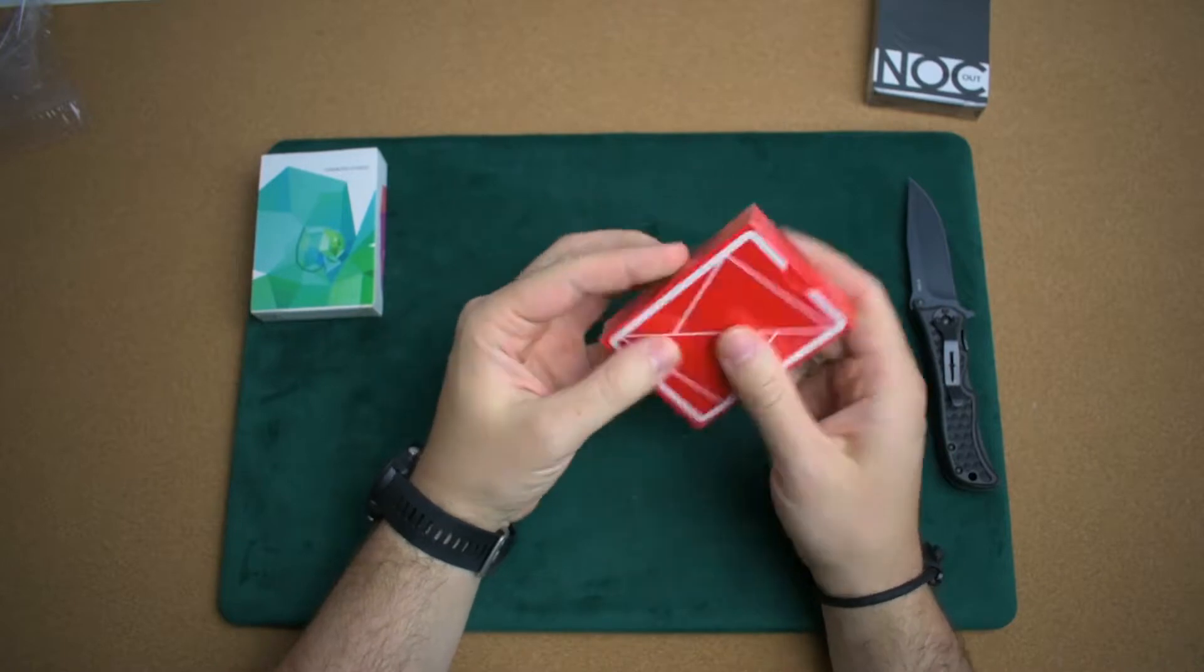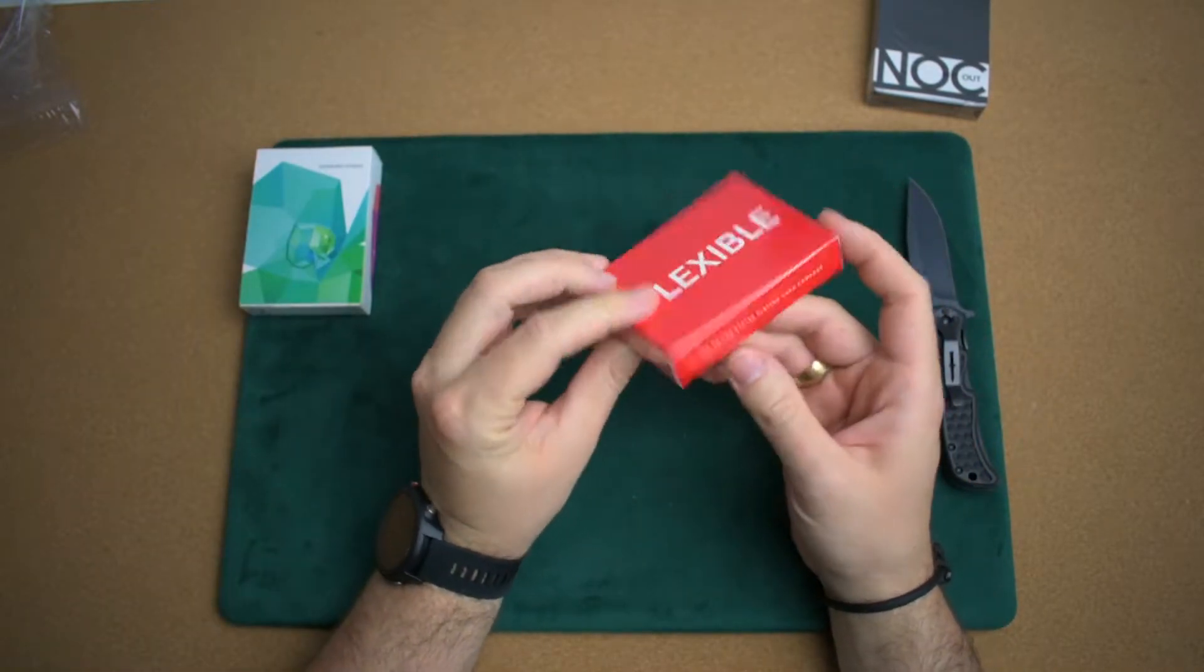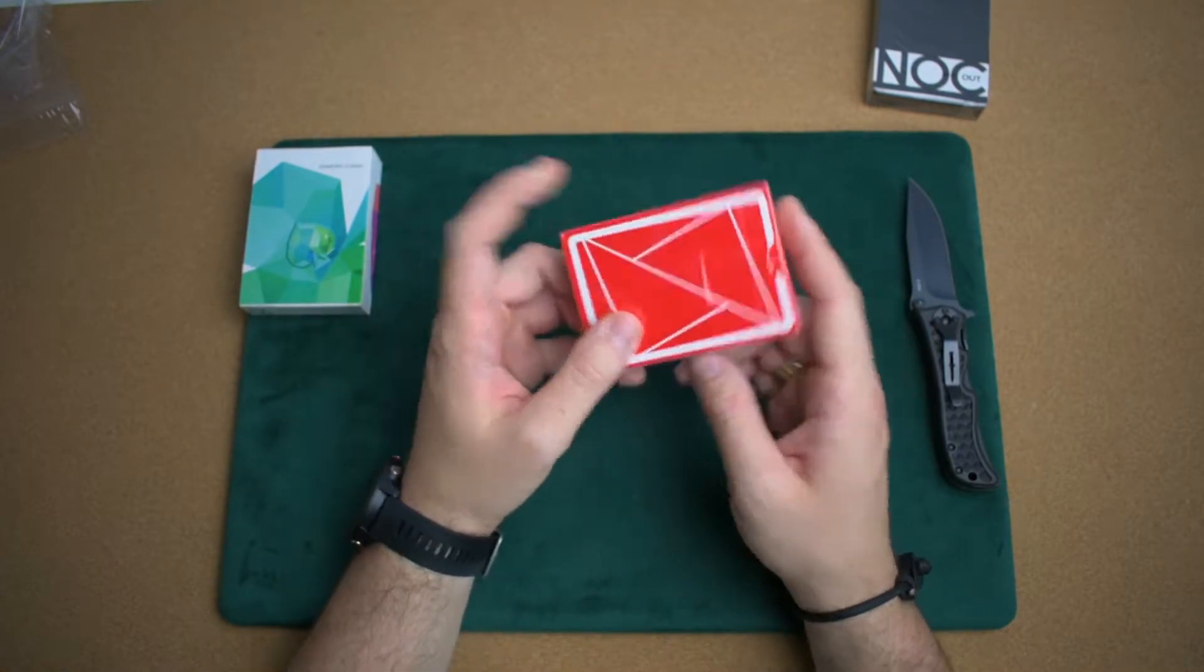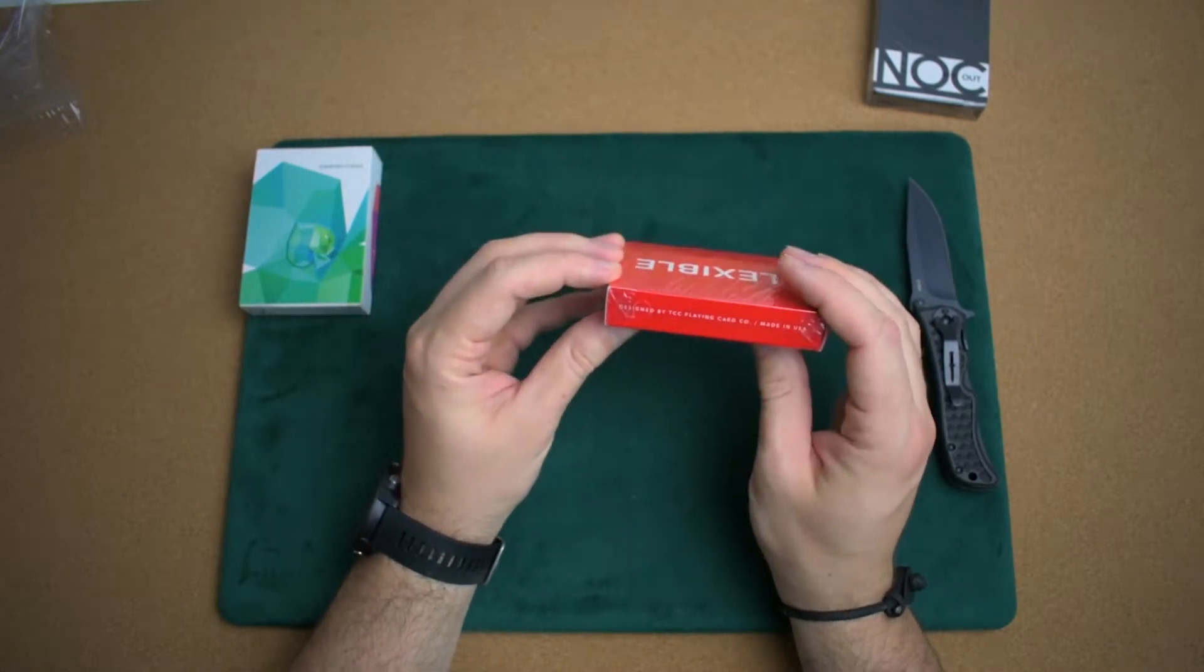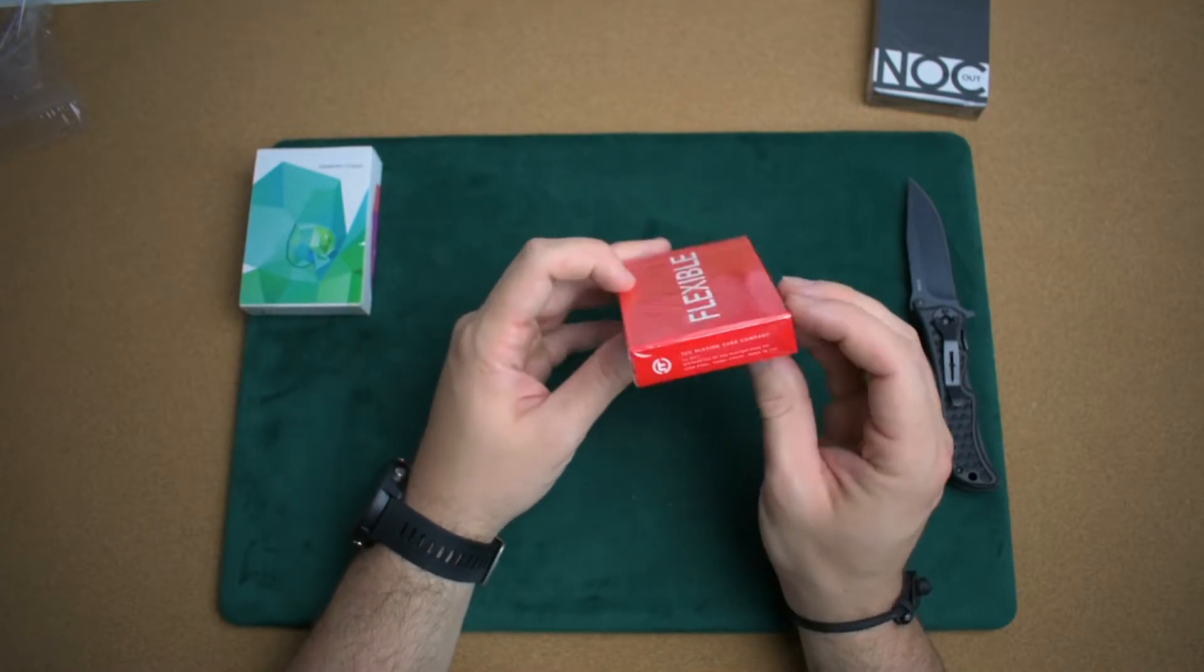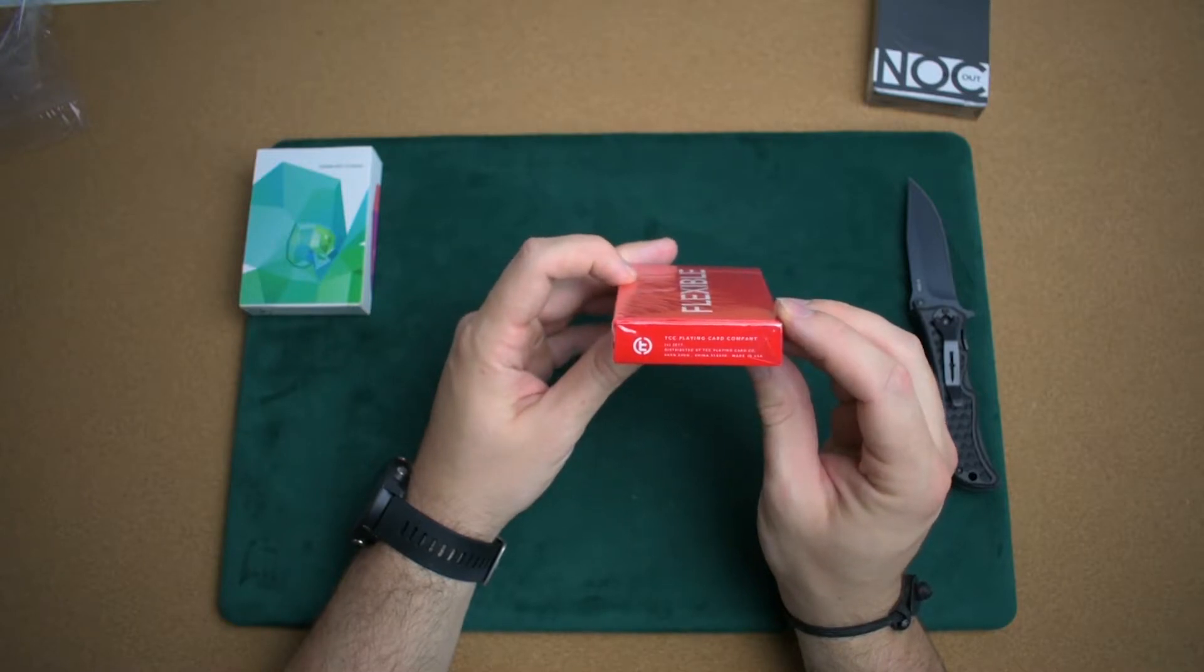And now let's see the Flexible Red. It's very similar price range. Okay, on the tuck is Flexible. United States Playing Card Company, USPCC. Designed by the TCC Playing Card Company, made in USA. On the bottom, TCC Playing Card Company, 2017. Let's open it now.